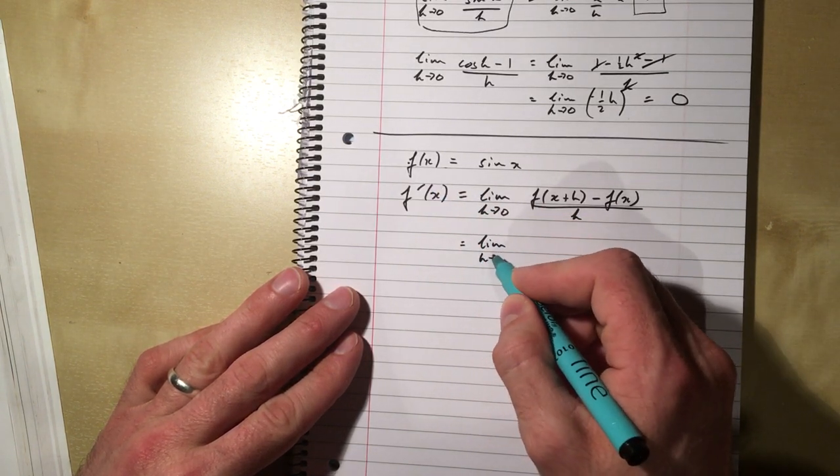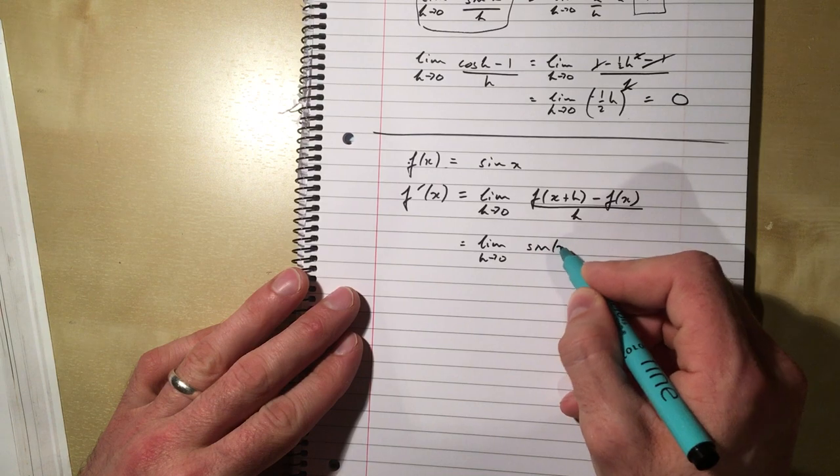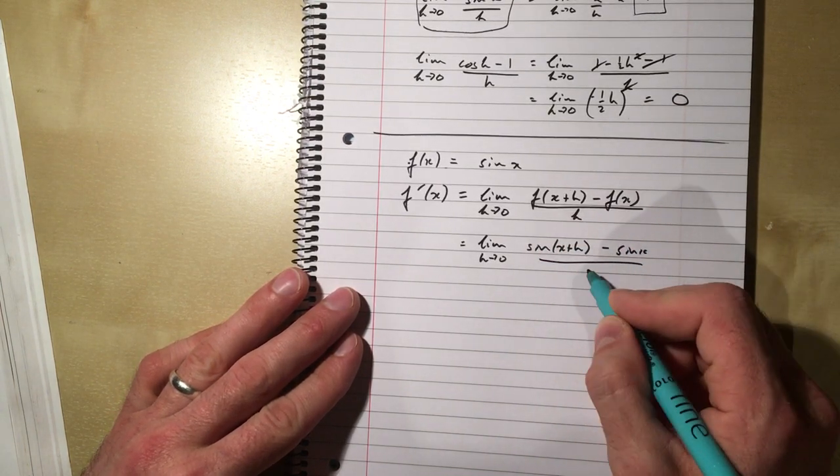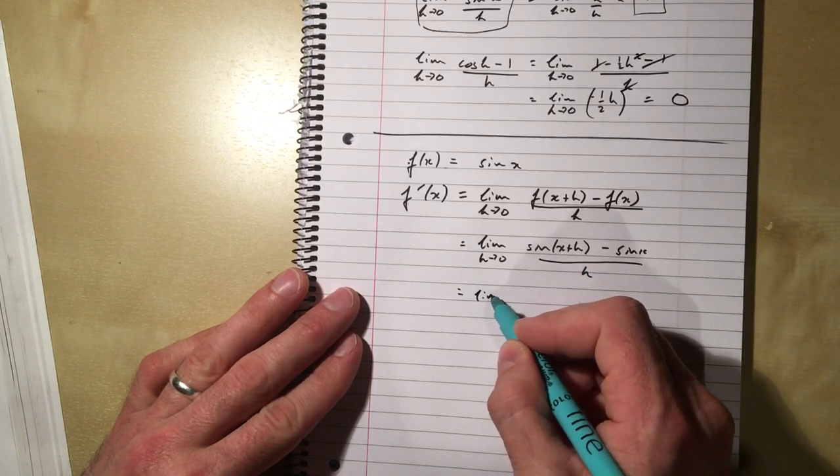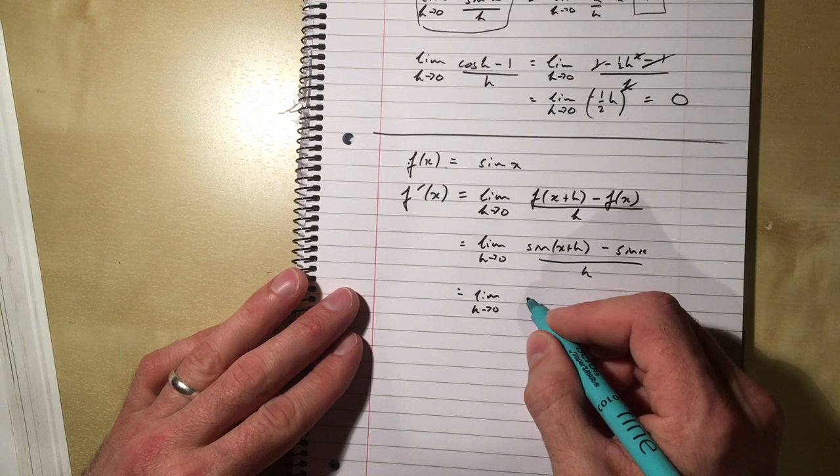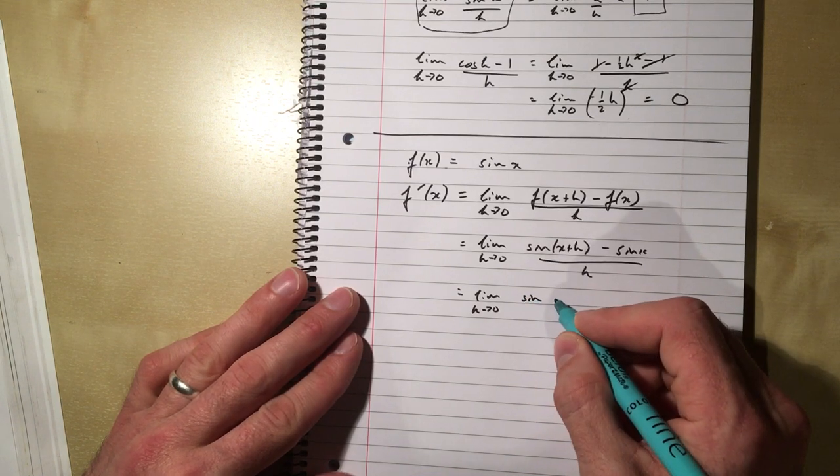So this f of x is sine x, so this is limit as h tends to 0 of sine x plus h minus sine of x, all divided by h. You might expect then, it's only a couple of chapters ago, that we were looking at sine of a plus b.